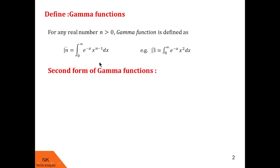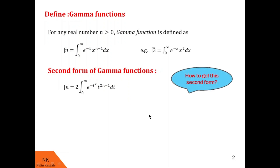Now let me show you the second form of the gamma function. It is given by 2 times the integral from 0 to infinity of e raised to minus t squared into t raised to 2n minus 1 dt. To get this form, we substitute x equal to t squared in the first form.